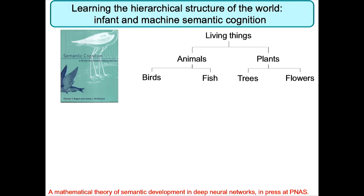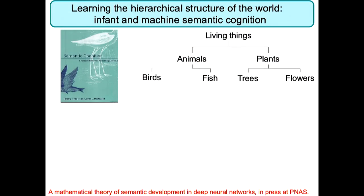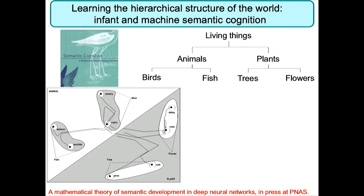Let's pop up a level to psychology. There's a remarkable alignment between the way infants learn about the world and the hierarchical structure of our world. If an infant is learning about the domain of living things, at an early age it learns to discriminate animals versus plants, then birds versus fish and trees versus flowers, making finer and finer scale discriminations as it gets older. Jay McClellan and colleagues showed that deep neural networks do exactly this. Here's a low-dimensional visualization of the trajectories of internal representations of a deep neural network as it learns facts about a domain of living things — the initial discrimination it learns is the coarsest one between animals and plants, then birds and fish, trees and flowers, and finally the individual items.